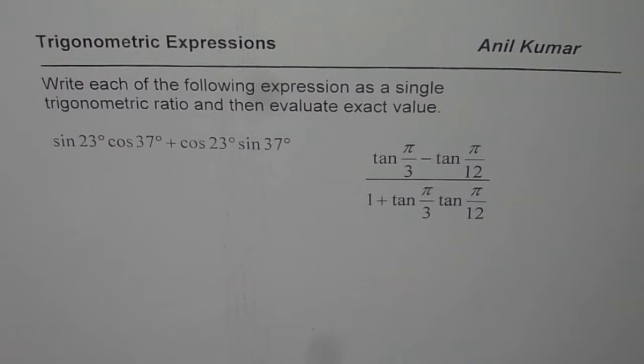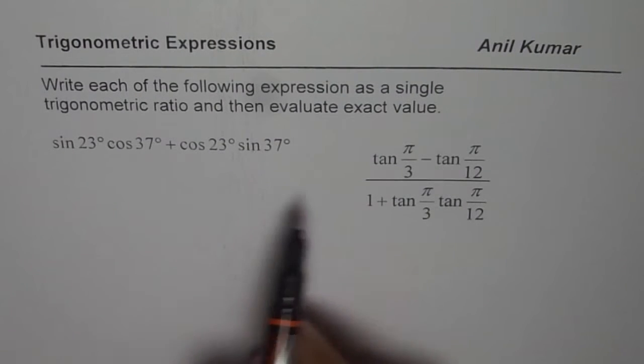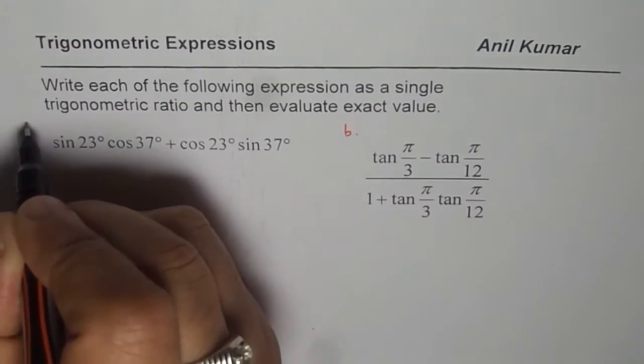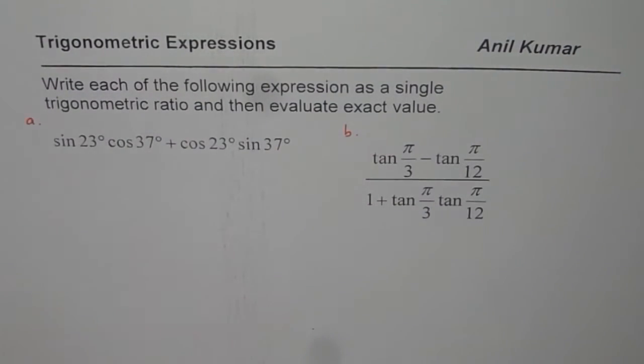The question here is, write each of the following expression as a single trigonometric ratio and then evaluate exact value. We have two expressions here. The first one is sin 23° cos 37° plus cos 23° sin 37°. The other one is tan π/3 minus tan π/12 divided by 1 plus tan π/3 tan π/12.